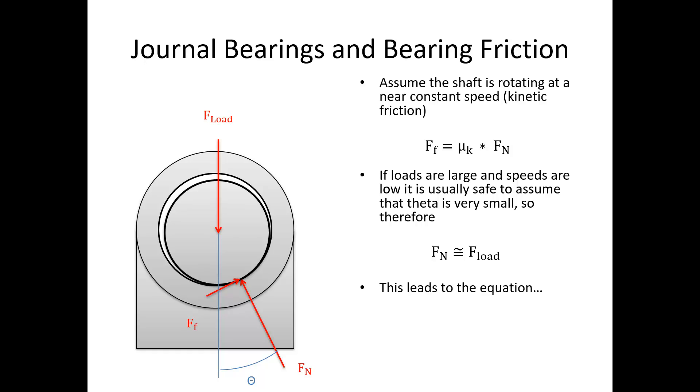This leads to the following equation. If you want to know the moment for the resistance, the moment due to friction, it'd simply be the friction force, which is μ_k times F_load times the radius of the shaft. M_losses is the torque lost to bearing friction in this case. So a pretty simple formula. Coefficient of friction times the load force times the radius of the shaft gives us the moment of the losses due to friction.